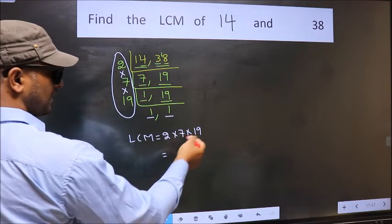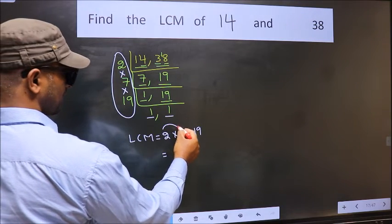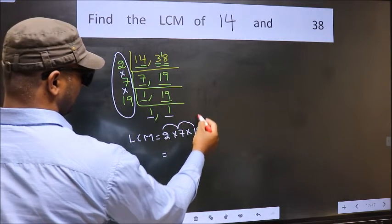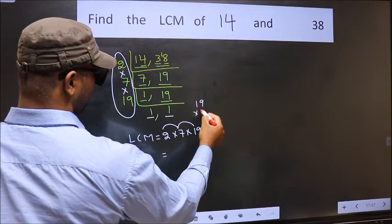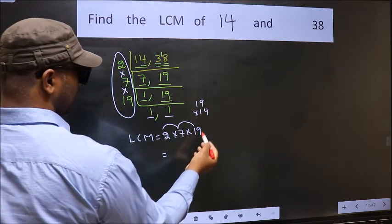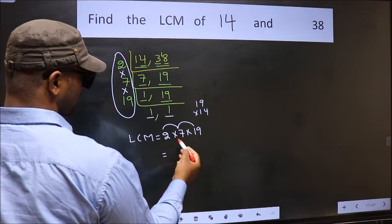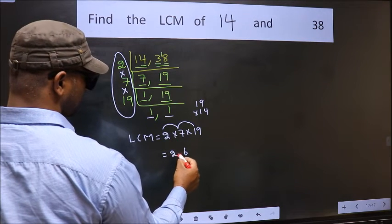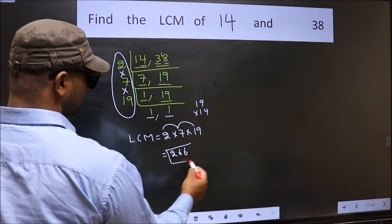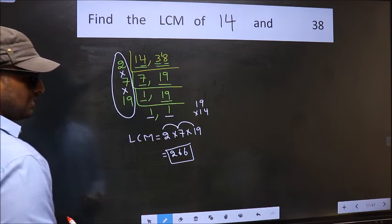So let us multiply these numbers. 2 into 7, 14 into 19. 14 into 9, 126. So 6, 12. 14, 1, 14 plus 12 is 26. So 266 is our LCM.